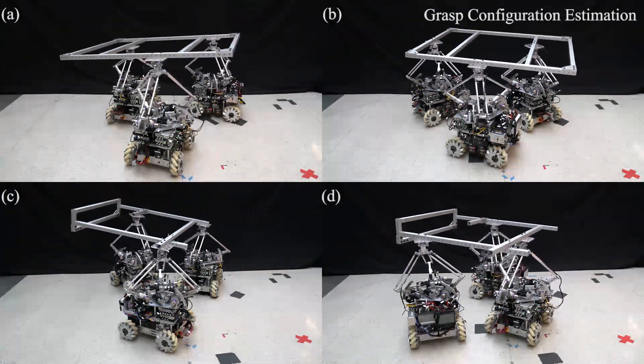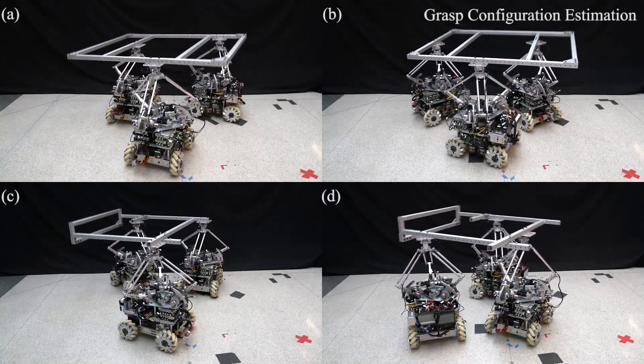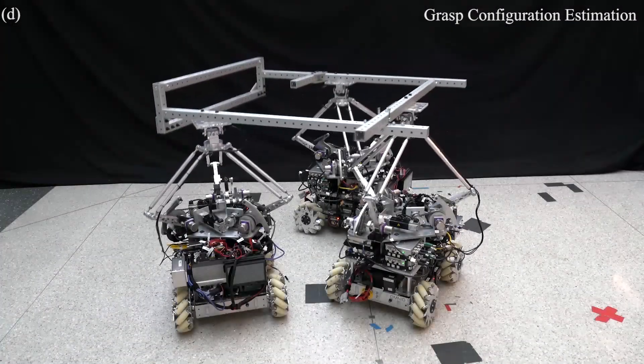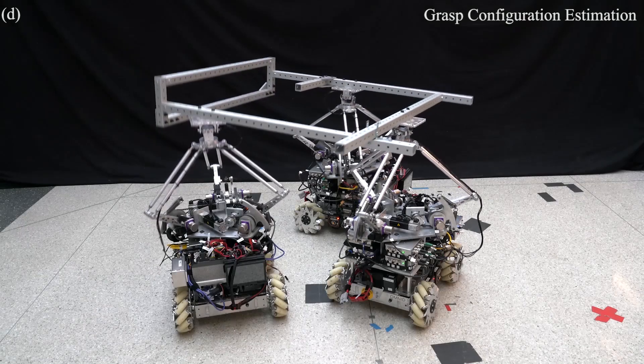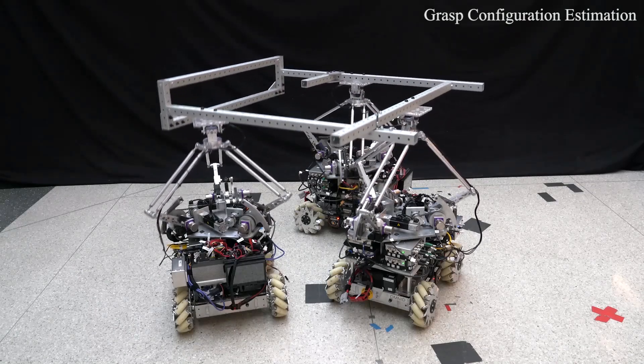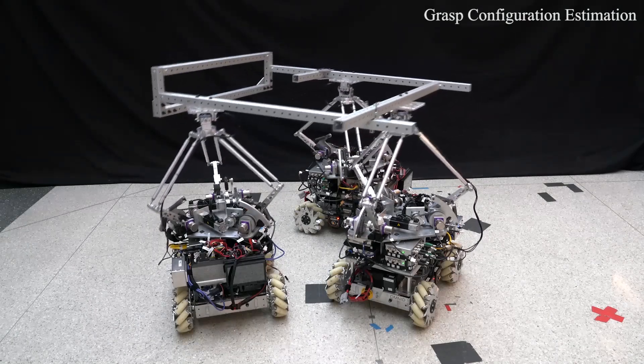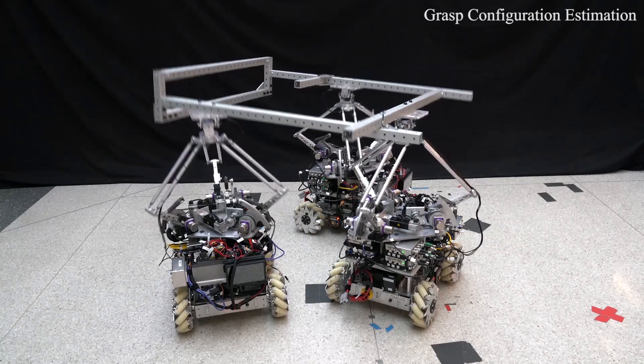During estimation of the grasp configuration, the robot end-effectors move along random trajectories, using passive and active compliance to keep internal forces small. The twists at the end-effectors are used to estimate the grasp frames.